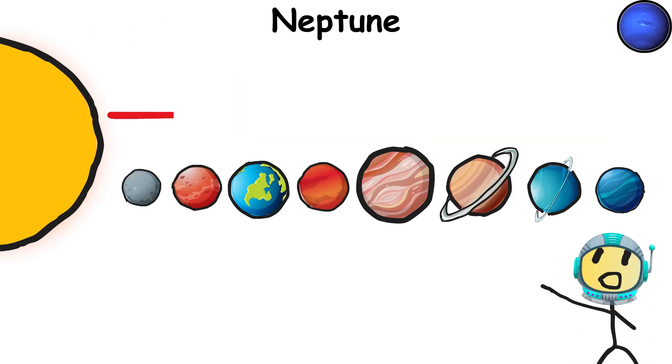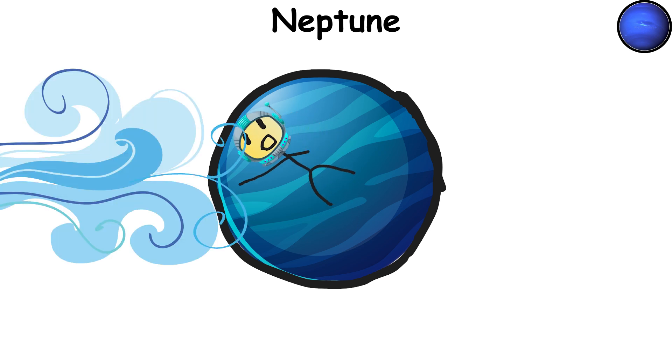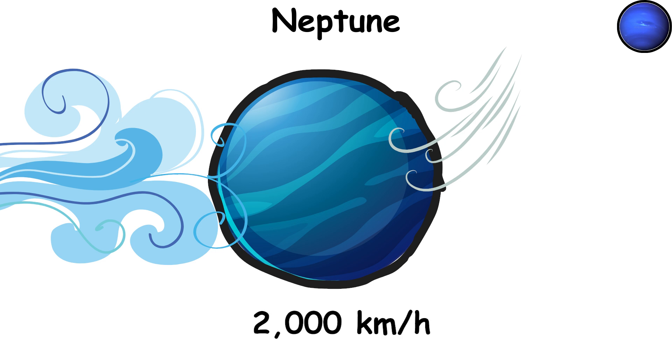Neptune, this blue beauty, is the farthest planet from the sun, a staggering 2.8 billion miles, 4.5 billion kilometers away. It's home to some of the fastest winds in the solar system, whipping around at 1,200 miles per hour, 2,000 kilometers per hour. That's faster than the strongest hurricane on Earth. Want to catch some fresh air? Good luck.